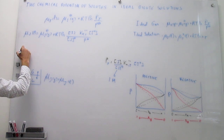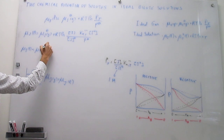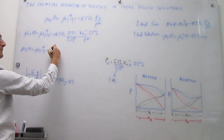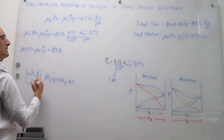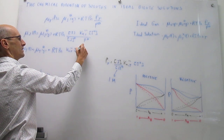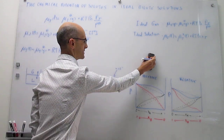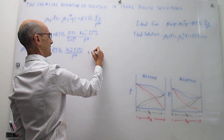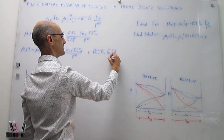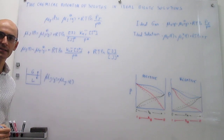Let's write that out. The chemical potential of J in the liquid phase is equal to the chemical potential of J in the gas phase at the standard state, plus RT times the natural log of K_H,J (triple prime) times the concentration of J at the standard state over the standard pressure, plus RT times the natural log of the concentration of J over the concentration of J at the standard state, which we know is just one molar.